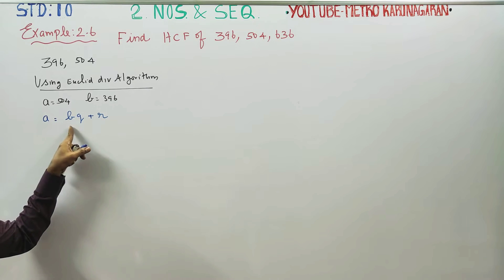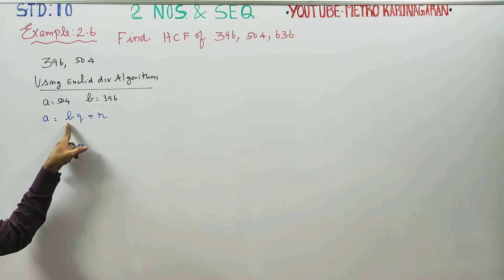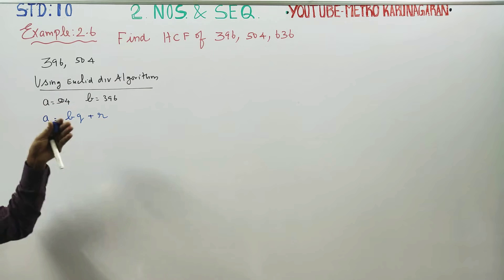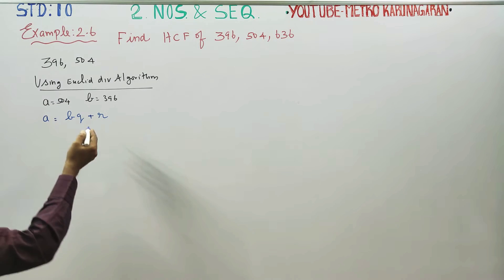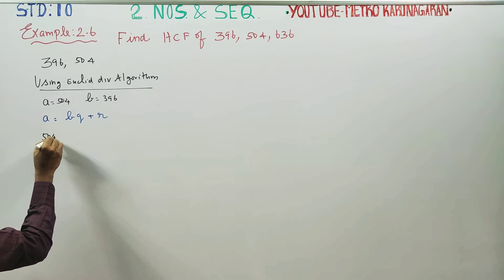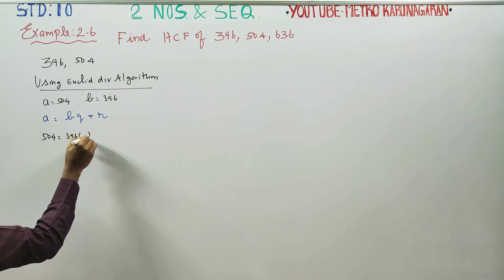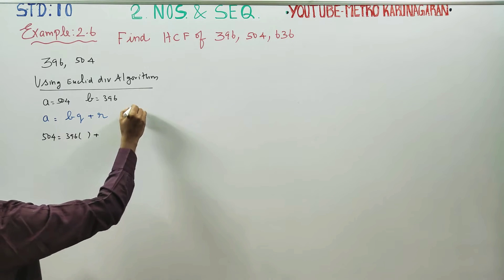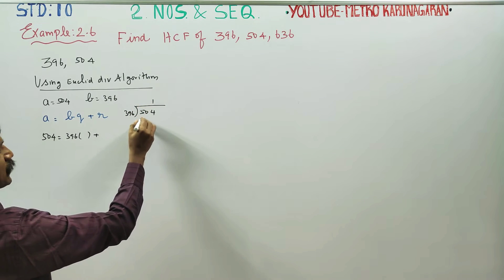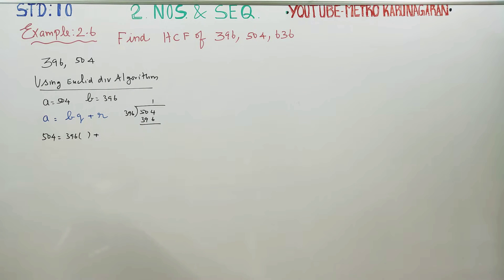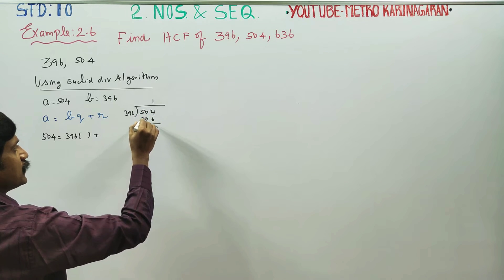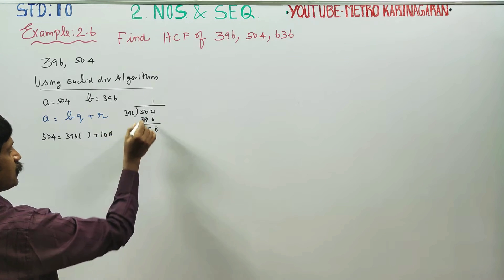The larger number is the dividend A, and the divisor B is 396. A is 504, B is 396. Using rough division: 504 divided by 396 — 1 times 396 gives 396. 14 minus 6 is 8, 9 minus 9 is 0: remainder is 108. Q is 1, R is 108.